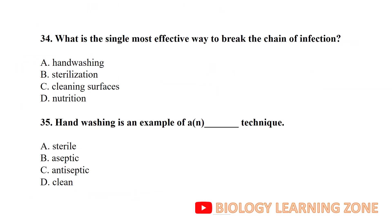What is the single most effective way to control general infection? Handwashing is the most effective way to control general infection. Handwashing is an example of aseptic technique.